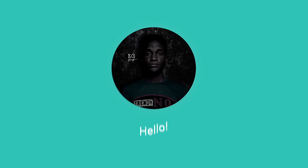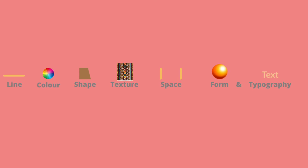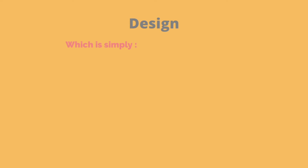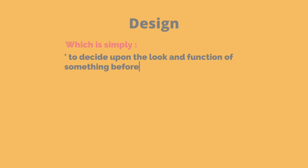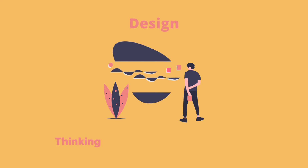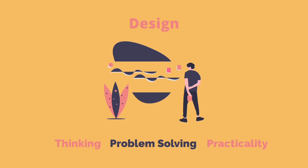So in order to create a good artistic expression, these visual elements are selected and combined in the right way to create an idea. The second part is design, which is simply to decide upon the look and function of something before it's made. Therefore, design is thinking, problem solving, and practicality.